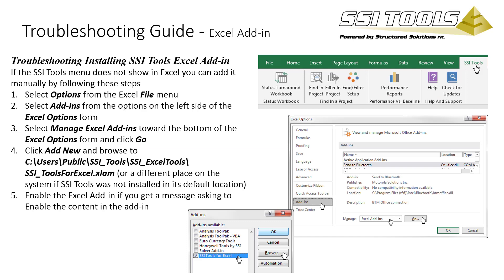If the SSI Tools menu is missing in Excel, you can add it manually using these five steps.